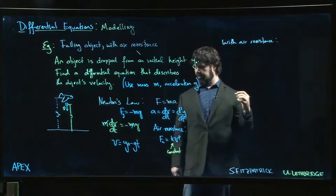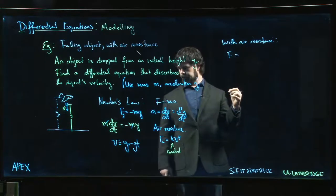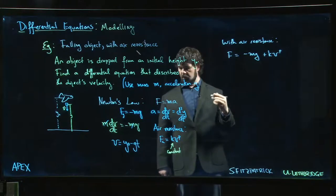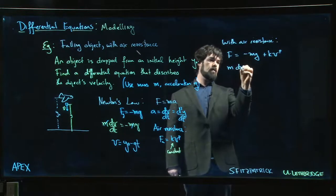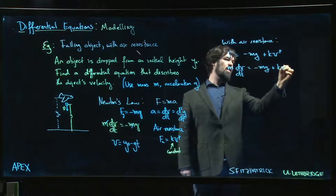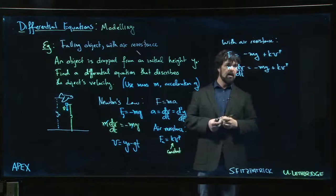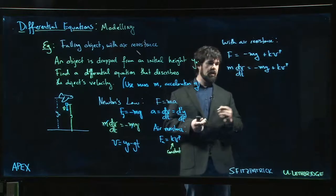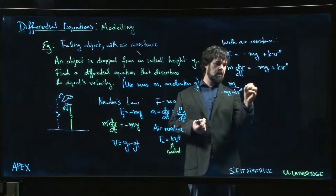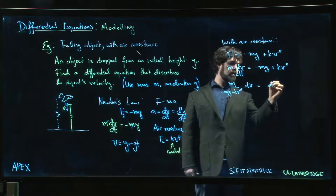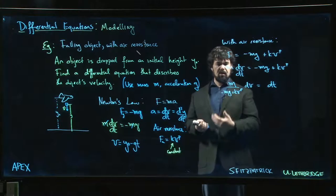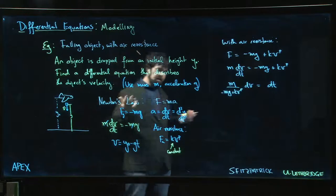Well then we get something that looks like this: our force is going to be -mg + kv^p. We can set it up like that. This is actually separable. We could write this as m/(-mg + kv^p) dv = dt. The problem is that without knowing the value of p, integrating the left hand side is going to be problematic.